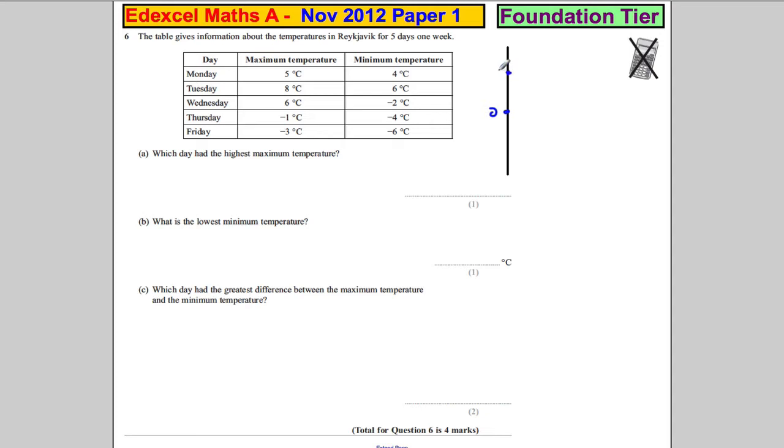So five degrees would be here, six degrees would be here, eight degrees would be there, minus one would be there, and minus three would be there. Now which one's the biggest? Clearly eight, and eight happens on a Tuesday.